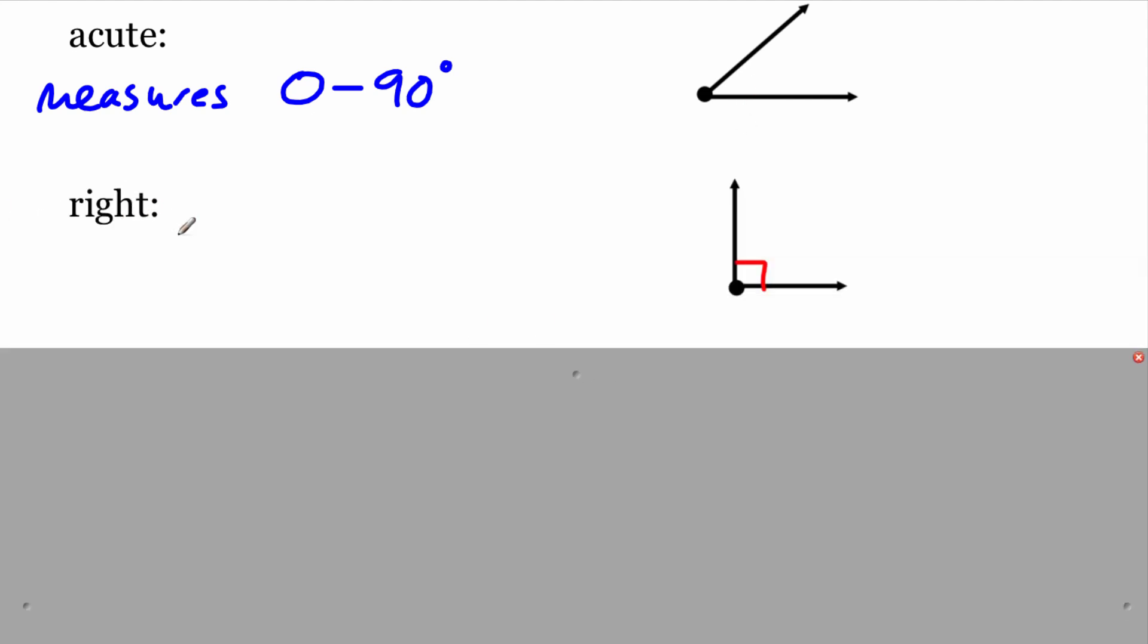Our next classification is a right angle. And a right angle is exactly 90 degrees. And the way we show that an angle is a right angle is we put this little square box down in the corner.